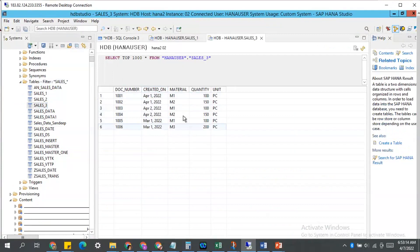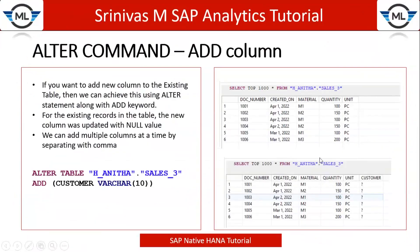I have a requirement to add one extra column to my table — let's say the extra column is the customer column. This is my existing table sales_three, and I want to create one extra column called customer. How can I achieve it? I cannot add this column graphically, so I have to do it via SQL only. The syntax is: ALTER TABLE, then the table name — since you are changing the table structure, we use the ALTER command — then ADD, and provide the field name followed by the data type.